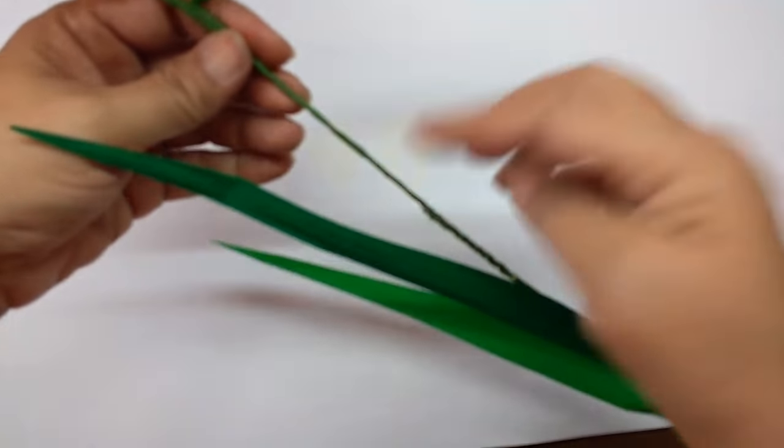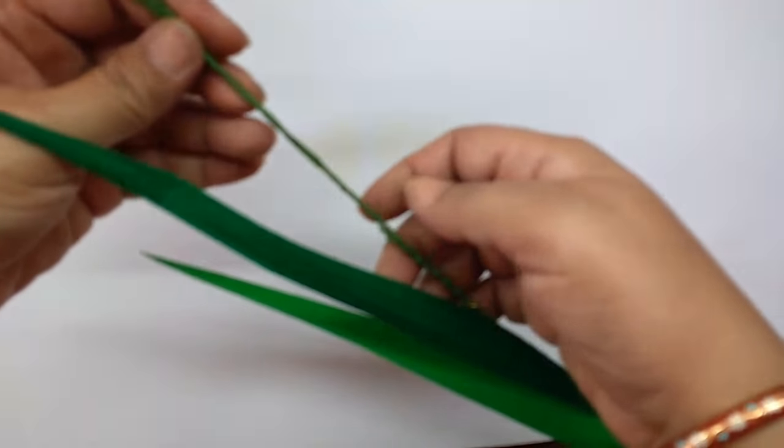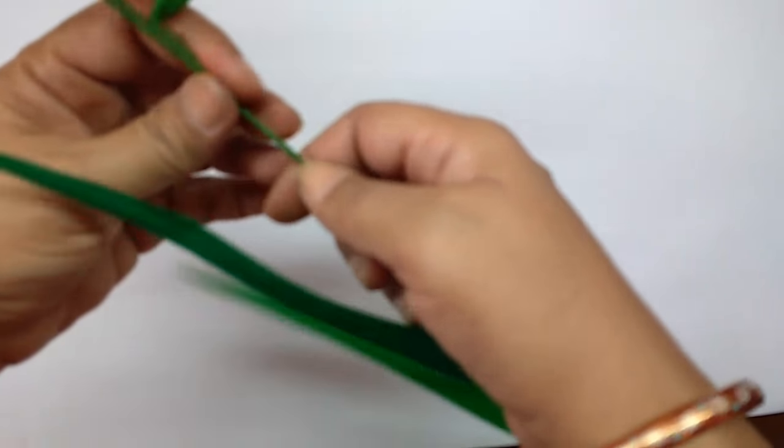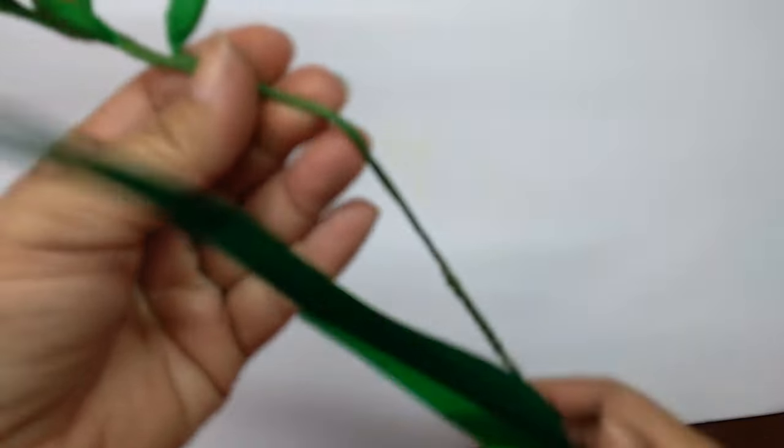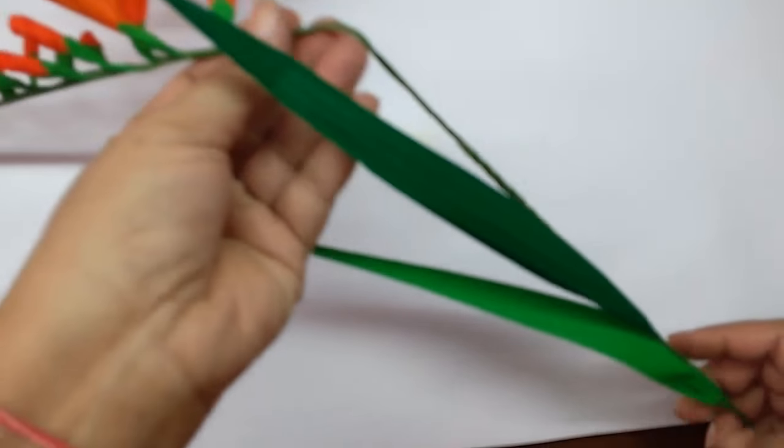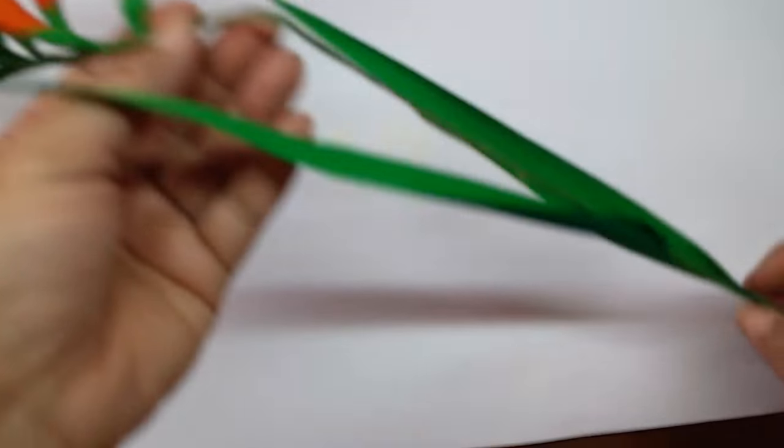Now just where the flower is ending, just give a bend upwards like this. The stem is linear, so this is how your Crocosmia would look.